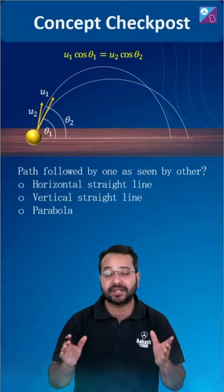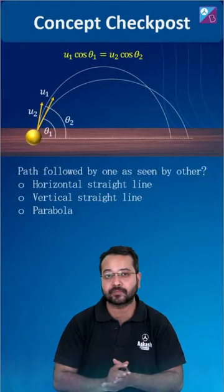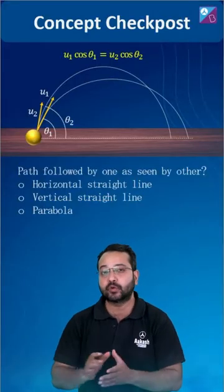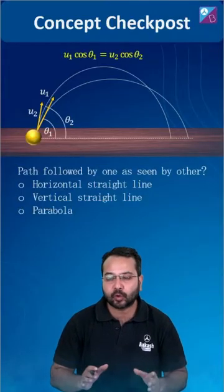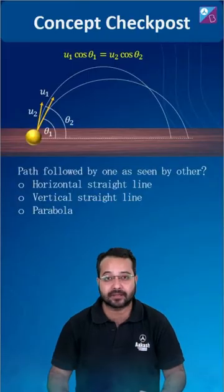Two projectiles are fired with unequal speeds and different angles of projection, but u1 cos θ1 is equal to u2 cos θ2. What will be the path followed by one particle as seen by the other?